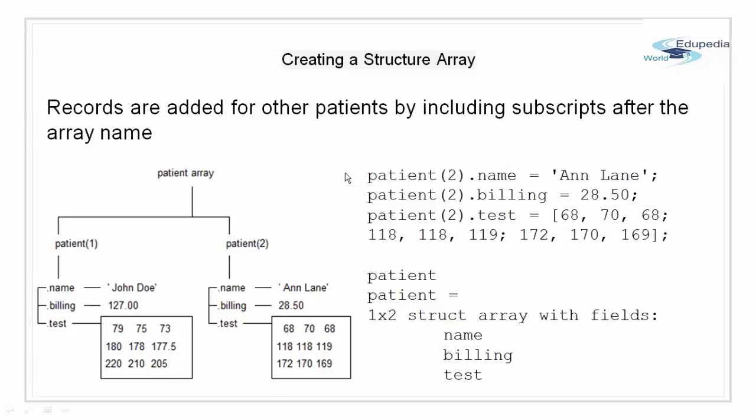In the diagram we can see that the structure is an array of size 2. This structure has information about patient 1 and patient 2 and each patient has its own field of name, billing and test.